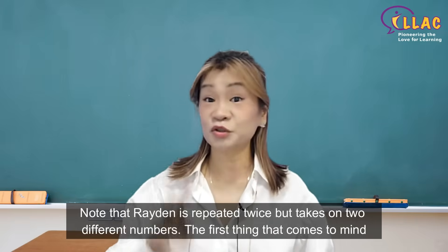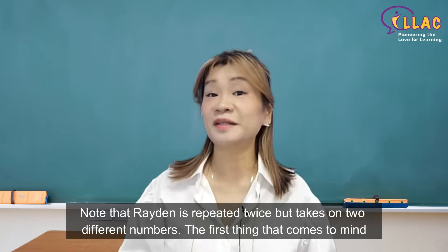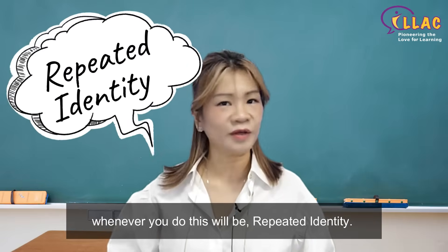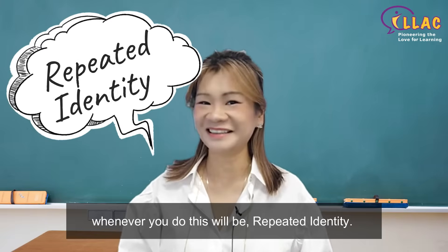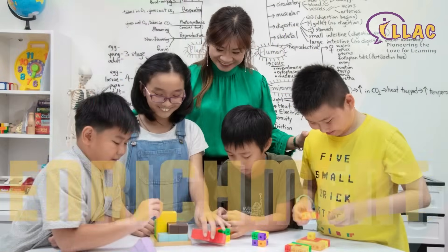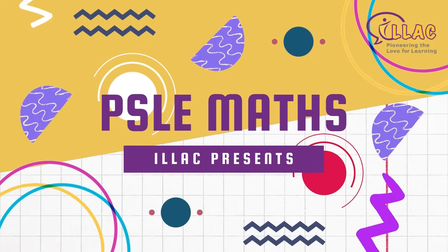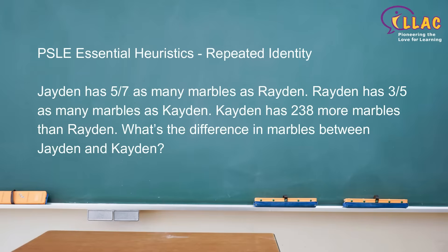Note that Raiden is repeated twice but takes on two different numbers. The first thing that comes to mind whenever you do this will be repeated identity. Jayden has 5 over 7 as many marbles as Raiden. Raiden has 3 over 5 as many marbles as Kayden. Kayden has 238 more marbles than Raiden. What's the difference in marbles between Jayden and Kayden?